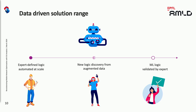The second use case uses data science and big data analytics to generate new data not previously known to experts, and the experts use that to come up with new logic — we call this augmented data. The third use case, more forward-looking, has machine learning working from the beginning trying to derive logic or cluster use cases, with the expert's role being to validate what comes out of the machine learning.